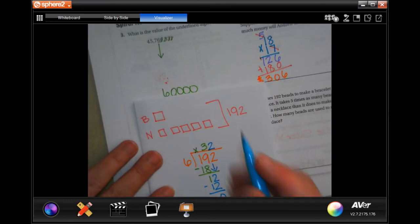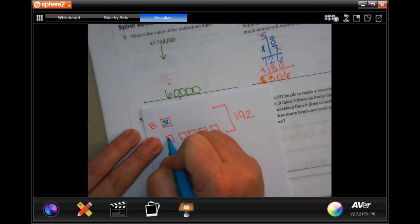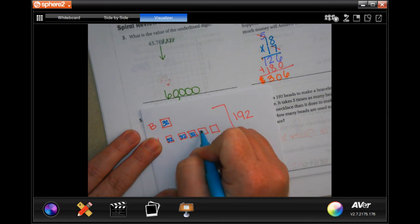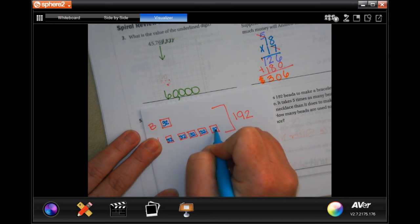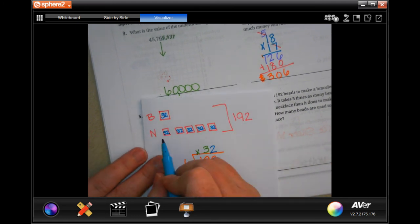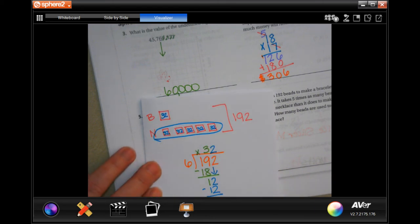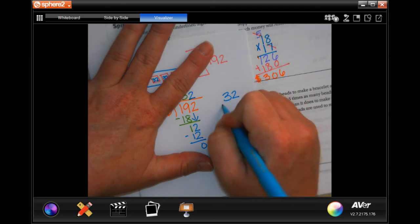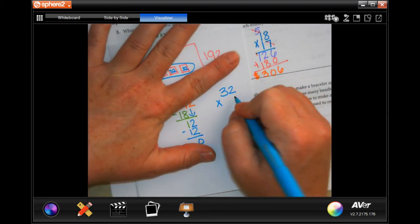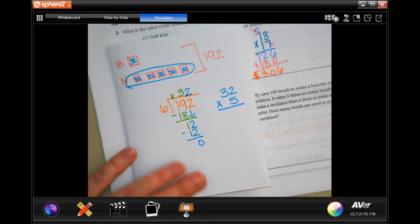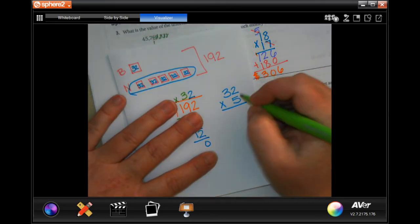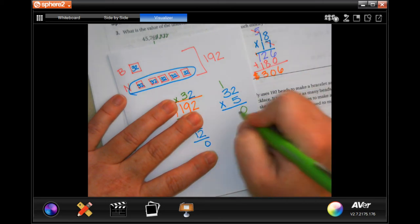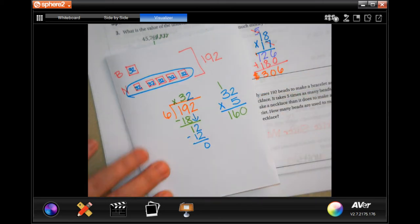We need to know how many that is all together. So now we're going to do 32. We're going to multiply it by the five boxes. So five times two is 10. Carry the one. Five times three is 15. Plus one more is 16. So 160 beads.